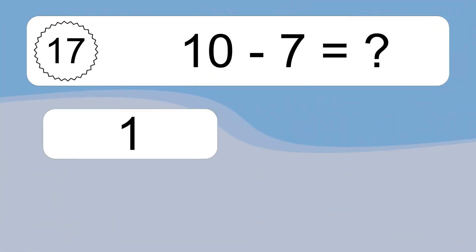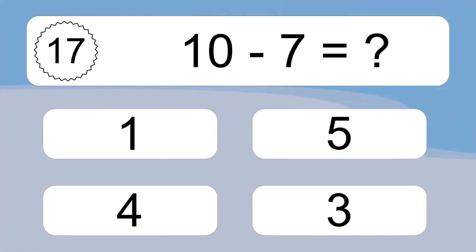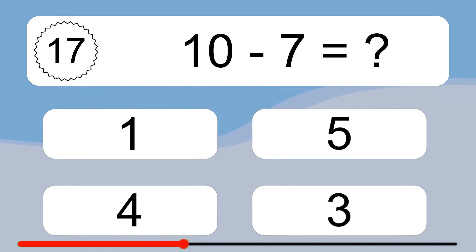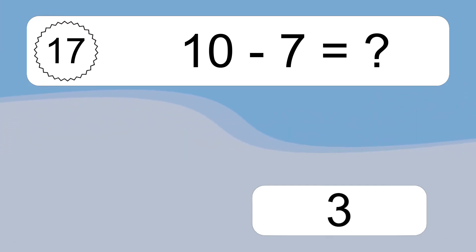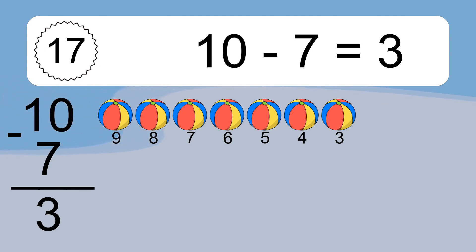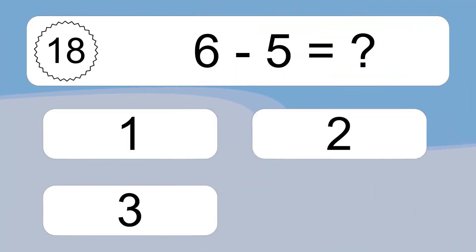10 minus 7 equals what? 10 minus 7 equals 3. Let's count it: 9, 8, 7, 6, 5, 4, 3.